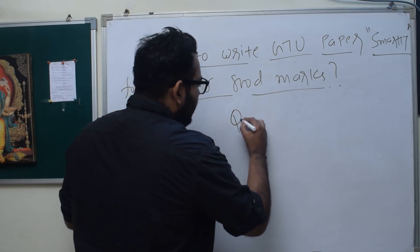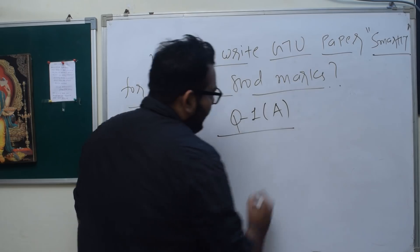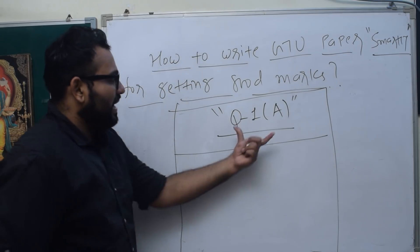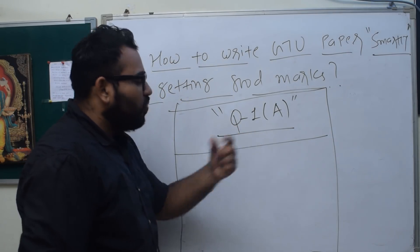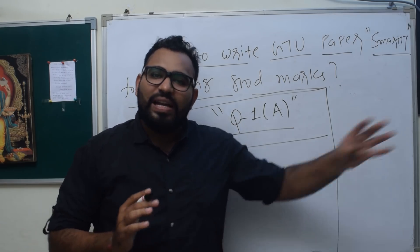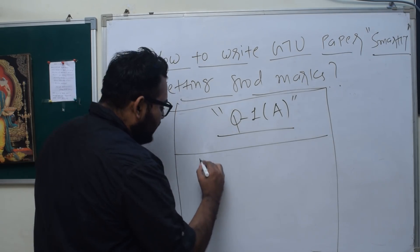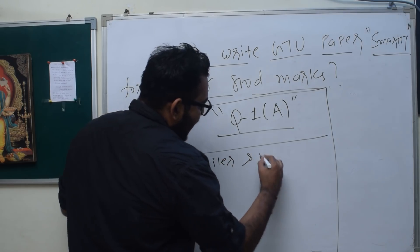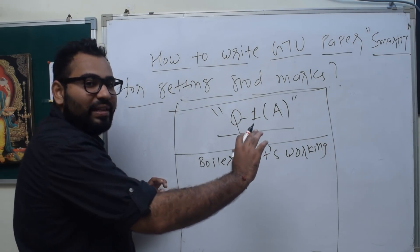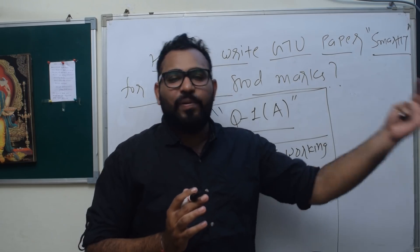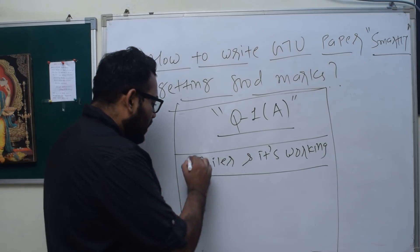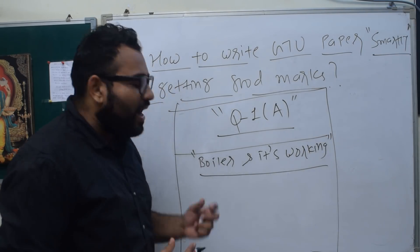We are going to attempt question 1A. Here is question 1A — you will write it clearly. For example: 'Explain the boiler and its working.' What you have to do is give a title like 'Boiler and Its Working.' If you have a black pen, it's better to write and underline the title. What is the function of a boiler and its working? I have converted it into a clear title — 'Boiler and Its Working' — and double underlined the title with a black pen.